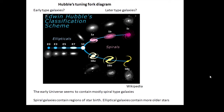On Hubble's tuning fork diagram, you've got the elliptical galaxies on one side — be able to sketch this by the way. The lenticular one is in the middle, and then there are the spirals and the barred spirals branching off.